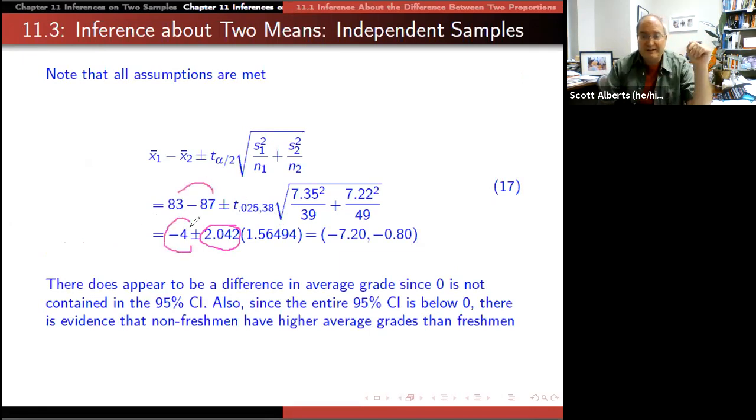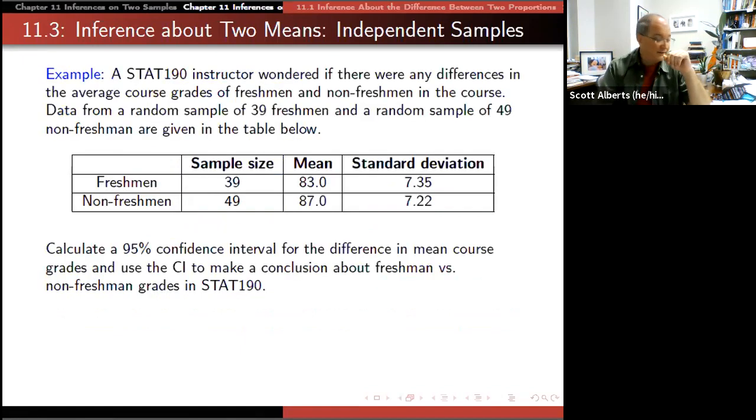83 minus 87 is 4. I could have done that without a computer. This function I probably could not have done without a computer. The square root of 49 I can do. But you can't do that because remember they're all inside the square root together. That number turns into 1.56494. And that gives us a confidence interval of -7.2 to -0.8. Because zero is not in that interval, that makes us think that that difference is significant. So the idea from her data is that non-freshmen do have a significantly higher score than freshmen do.